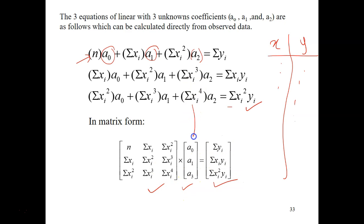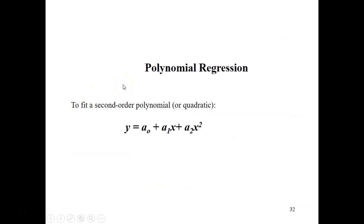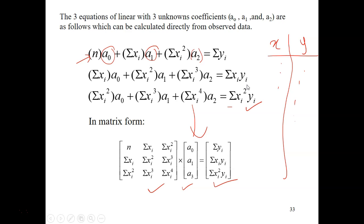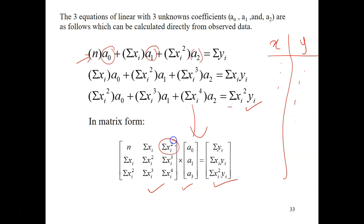Looking at the table, the original x and y data are given. To fit a second-order polynomial you need to calculate: summation of x squared, summation of x cubed, summation of x to the power of 4, summation of xy, and summation of x squared times y — plus the summation of x and summation of y. You need to add extra columns for x², x³, x⁴, xy, and x²y, and take the totals.